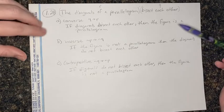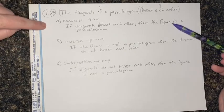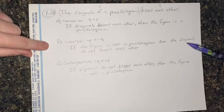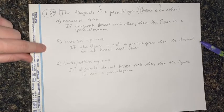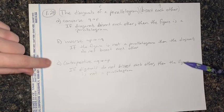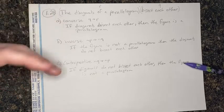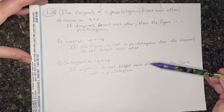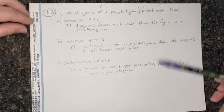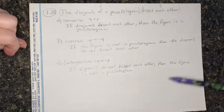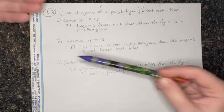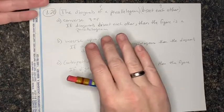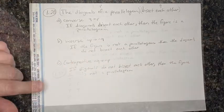The contrapositive is if not Q, then not P. So: if the diagonals do not bisect each other, then the figure is not a parallelogram. To summarize: converse is if Q then P, inverse is if not P then not Q, and the contrapositive is if not Q then not P. Look at your truth tables and practice setting these up for your if-then statements — we always have an if and a then.